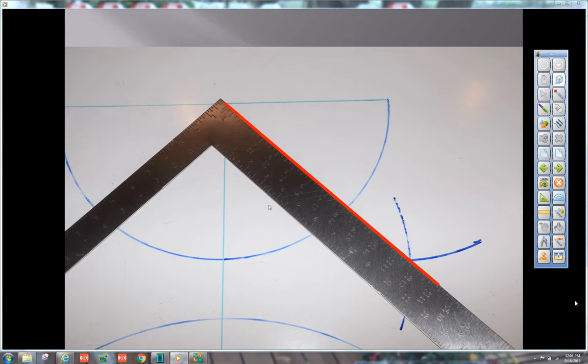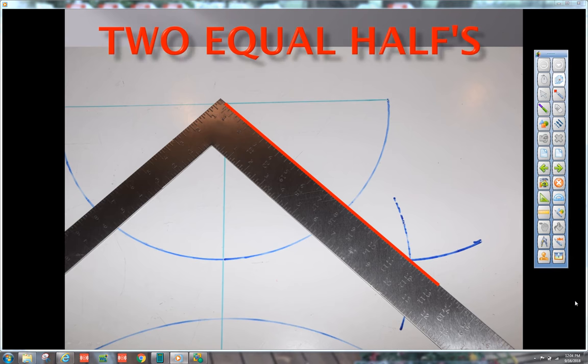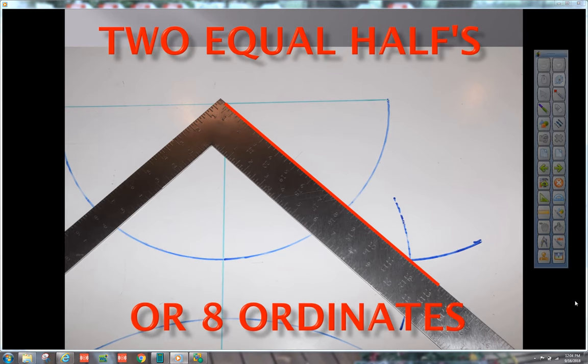We have two equal pieces of pie. Right now we have eight ordinates. One, two, three, four. Times that by two, that'll be eight. We're going to go 16.